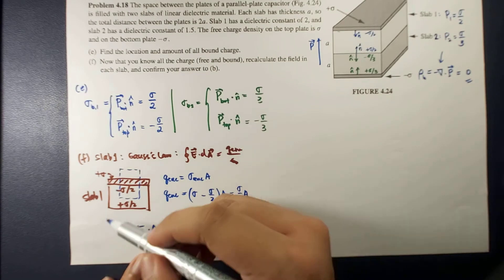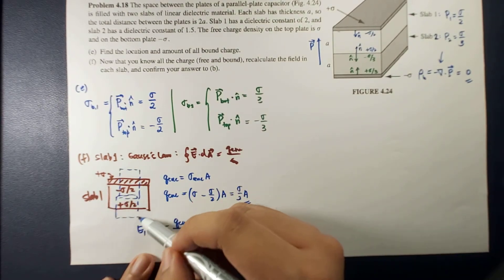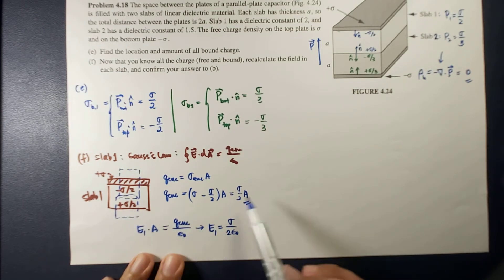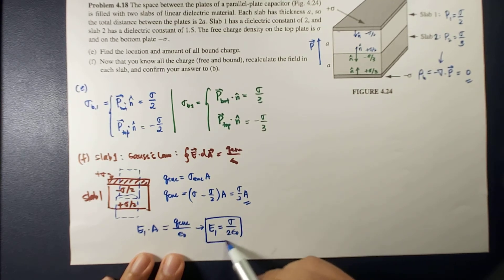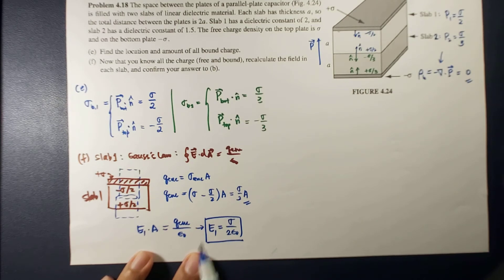We can do the same choosing the other Gaussian surface enclosing only the +σ/2 bound charge at the bottom of slab 1. Q_enclosed is again +σ/2 · A, so the result is the same: E = σ / 2ε₀. This is exactly what we obtained in our previous video in letter B.